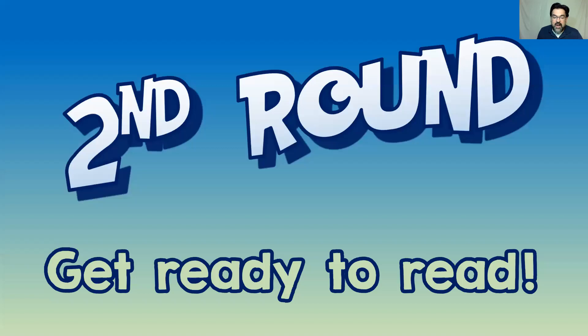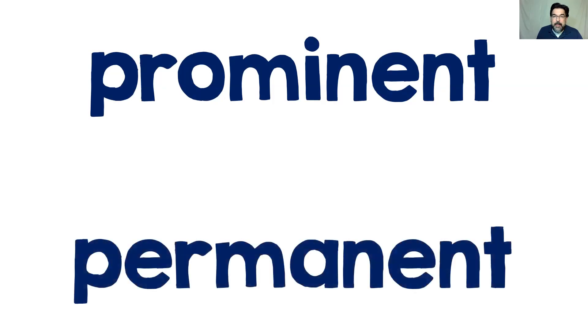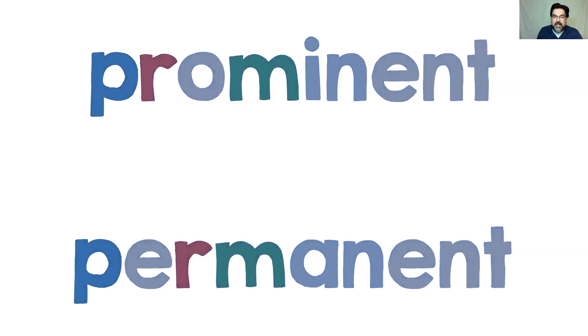All right, here's the second round. Just like before, I'm about to show you a word. I want you to read it right out loud. Did you say 'permanent'? The top word is 'prominent.' The bottom word is 'permanent.' There's a chance you said 'permanent' when you read 'prominent,' and there's a reason why. Let's take a look.